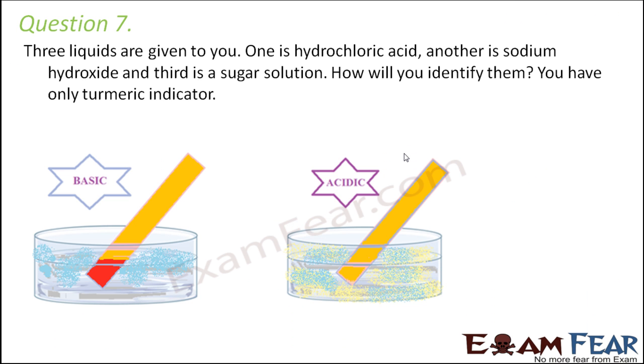Question number 7. Three liquids are given to you. One is hydrochloric acid, another is sodium hydroxide and third is a sugar solution. How will you identify them? You have only turmeric indicator. Now for turmeric indicator for basic solution which one will be basic? So if you put the turmeric indicator, the turmeric paper in each of these solution you will see that the turmeric paper turns dark red in case of the basic solution which is the sodium hydroxide.